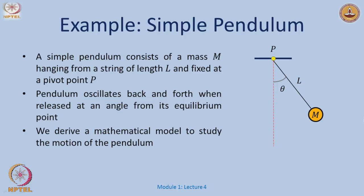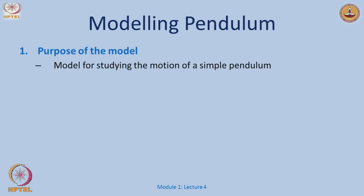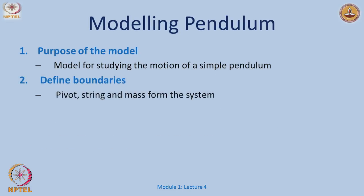The next example is very familiar — something learned in high school: a simple pendulum. By construction it has a mass m, a string of length l, hinged to a pivot point p. If released from angle theta, it keeps oscillating back and forth around its equilibrium point. The purpose of the model is to study the motion of the simple pendulum — how it behaves if released from 5 degrees, 10 degrees, or 90 degrees.